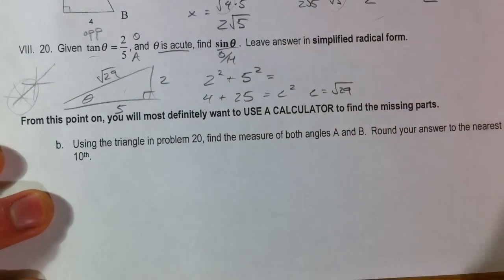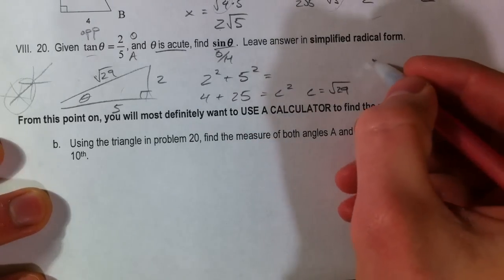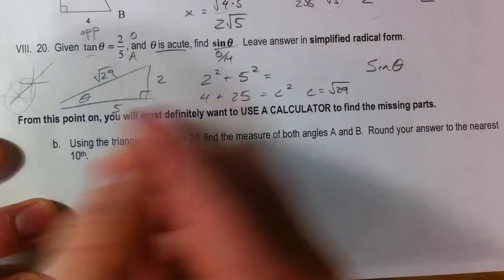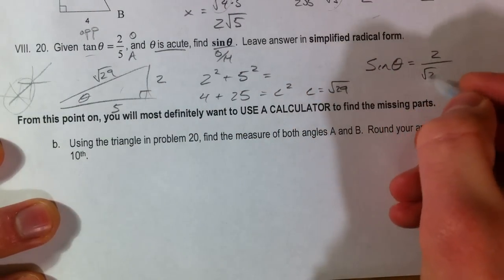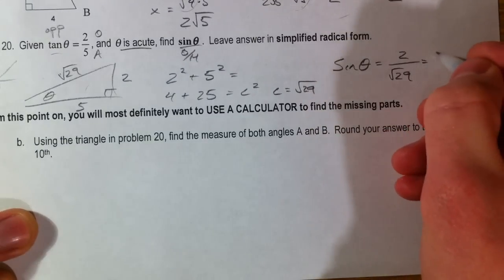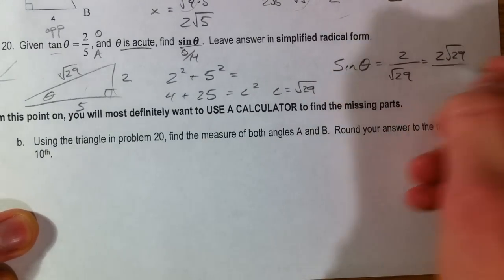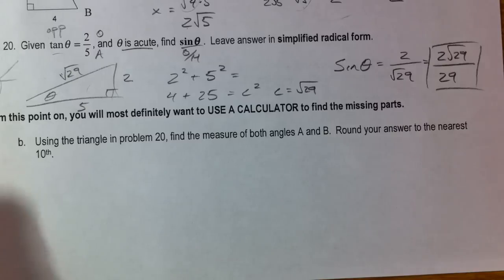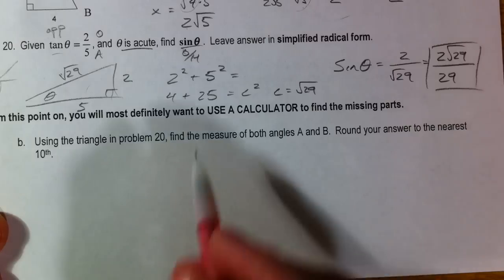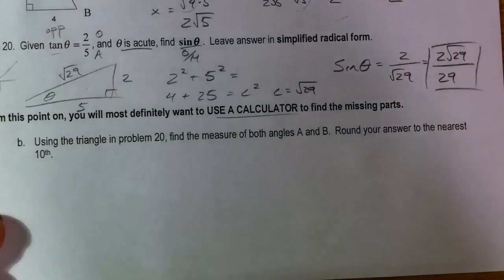Which does not reduce at all. And so then we take, say, our sine of our angle is the opposite. 2 over root 29. Or if we rationalize, 2 root 29 over 29. So, from this point on we're going to be using our calculator and so I'm going to start a new video.